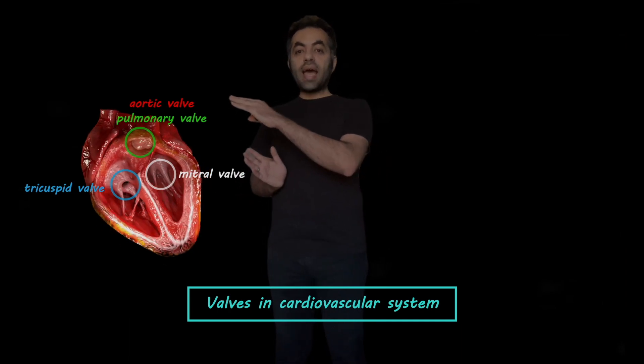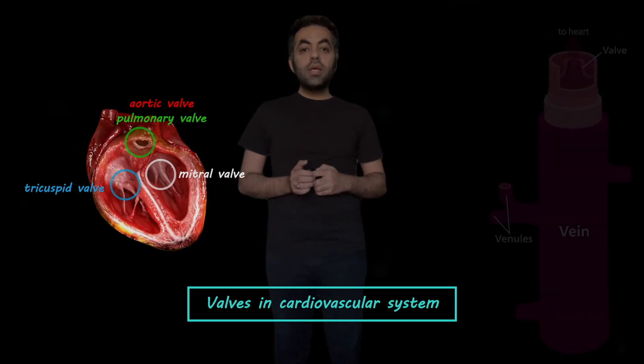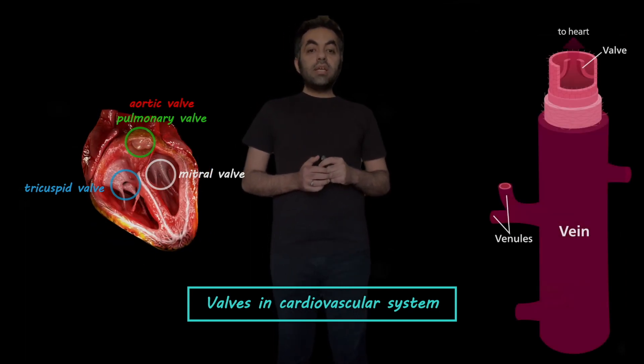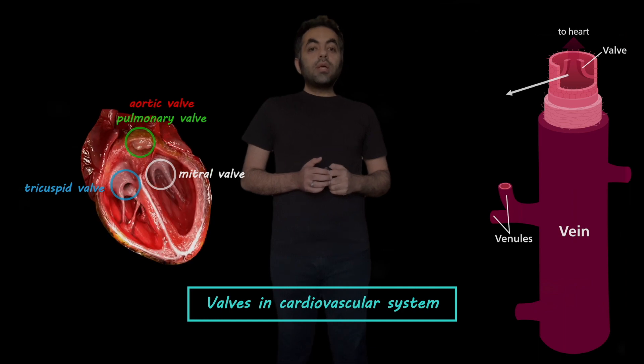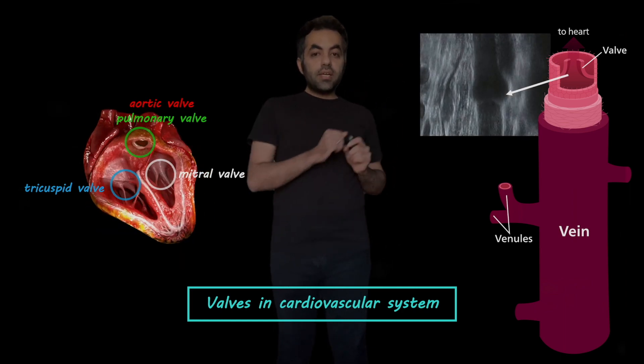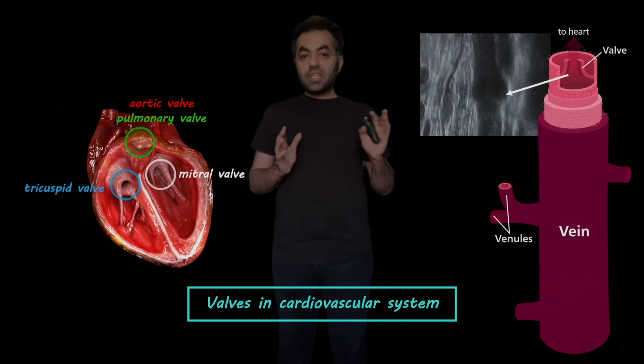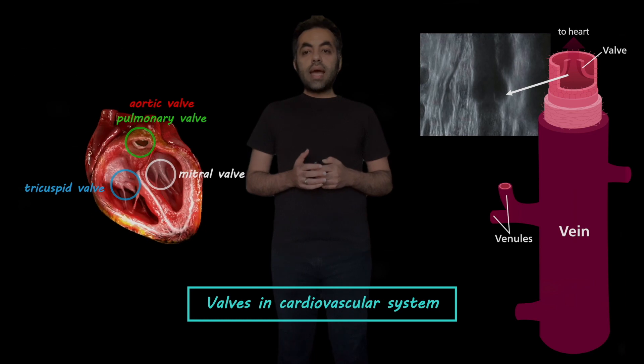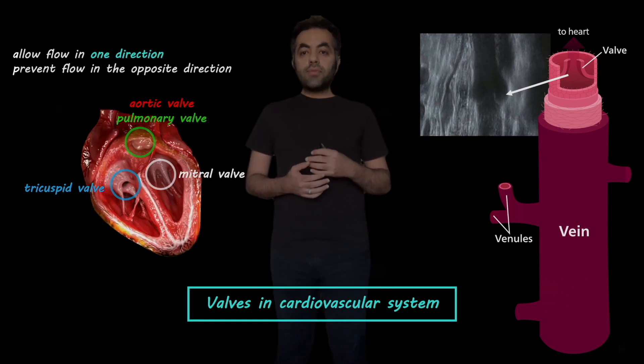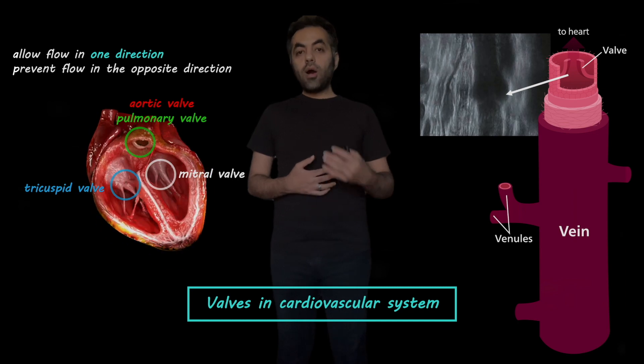These are not the only valves that we have in the cardiovascular system. There are other valves in the venous system such as this one in this scan here. Something that is common between all of these valves is that they only allow blood flow in one direction and prevent the flow in the opposite direction.